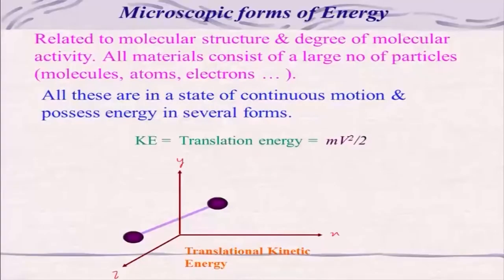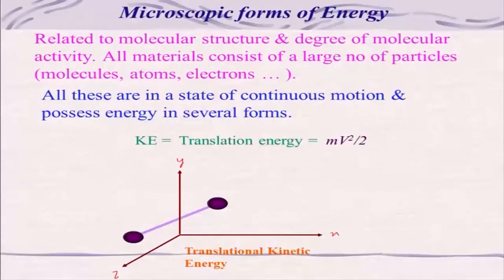Consider a single molecule of mass m moving with velocity v — this is translational kinetic energy. Keep in mind that in a real system like a cylinder of nitrogen gas, each molecule will have different velocities and the motion is very random. Molecules will collide with the wall or with each other. For a single molecule we write ½mv², but in reality each molecule has a different velocity.